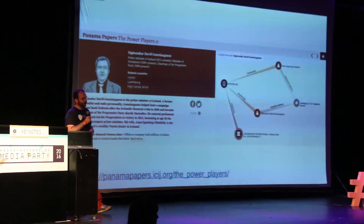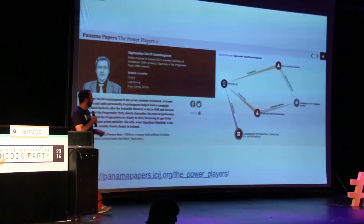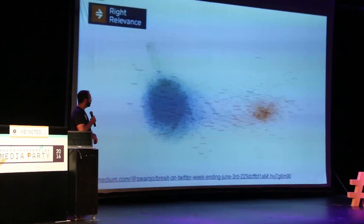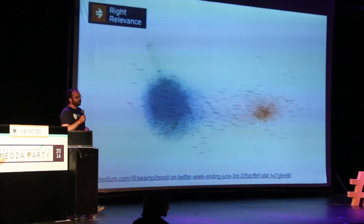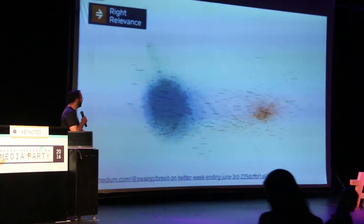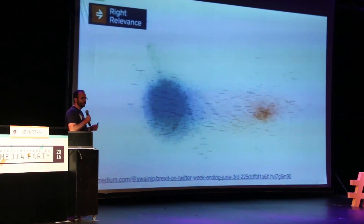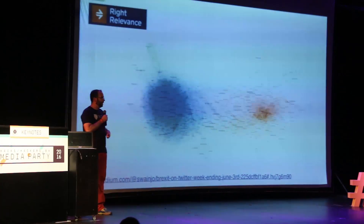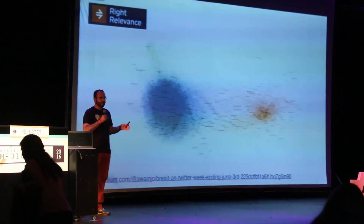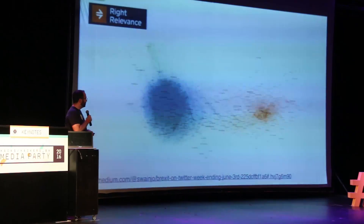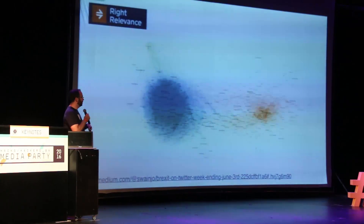You can actually download the public information of the Panama Papers as a Neo4j database at the link shown. We can also look at social media data. This is some analysis that some of our partners did, looking at media biases leading up to Brexit — the vote in the UK to leave the European Union. They found that the leave side was using much more emotional-type media to make more concise, shorter stories better suited for social media.